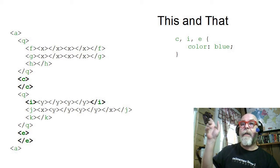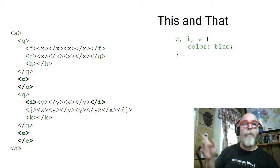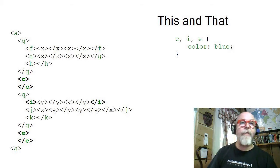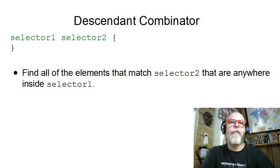You can see that a C tag, the I tag, and the E tag that I've bolded would be selected by this Combinator of the this and that.